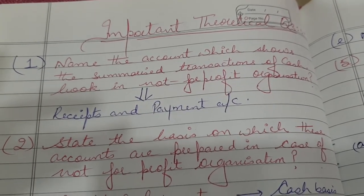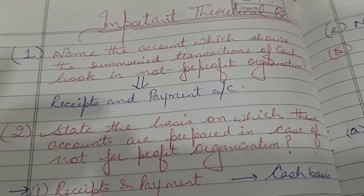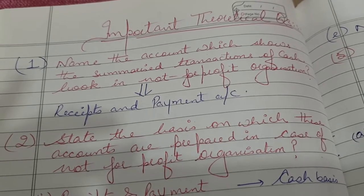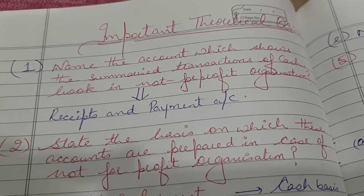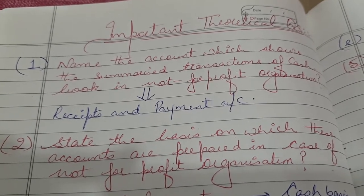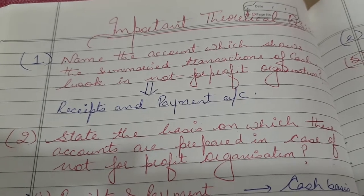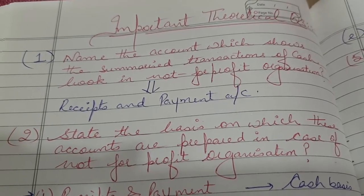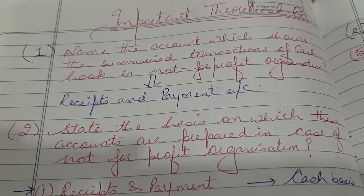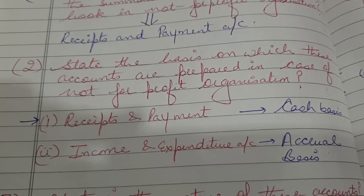Hello friends, all the best for tomorrow's accounts final exam. Now we'll discuss certain important theoretical questions. First, name the account which shows the summarized transactions of the cash book in a not-for-profit organization. The answer is the Receipt and Payment Account.